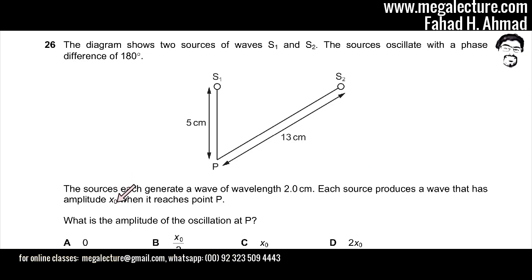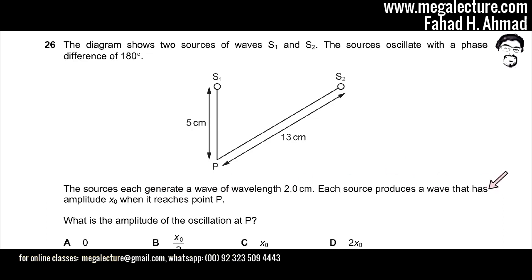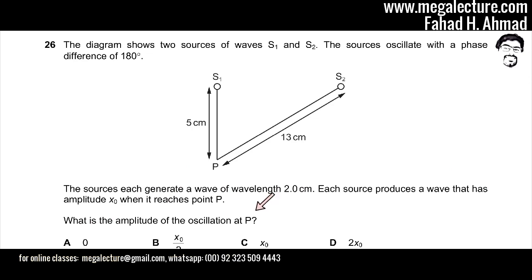The amplitude is also similar. So both sources are basically producing the same wave. Each source produces a wave that has an amplitude of X0 when it reaches point P. What is the amplitude of the oscillation at P?